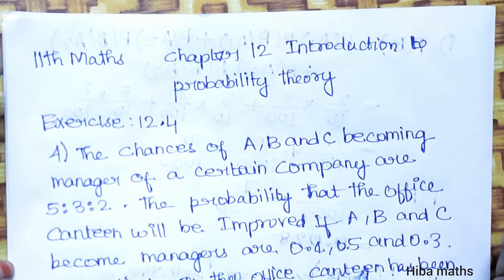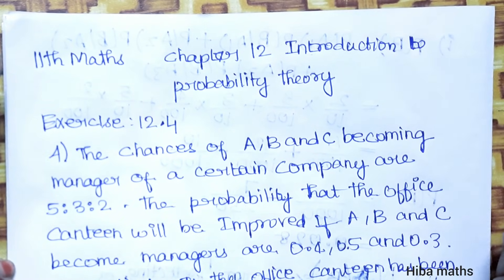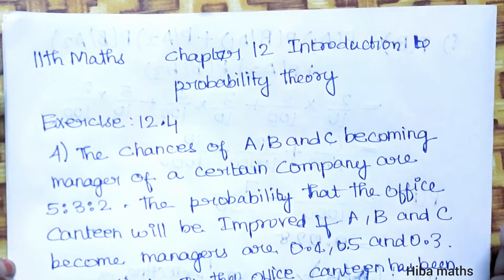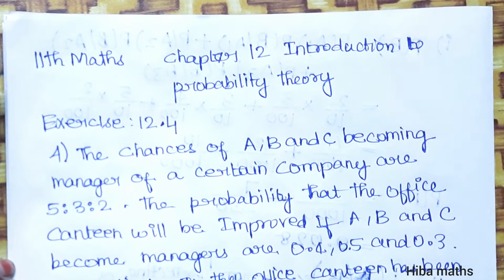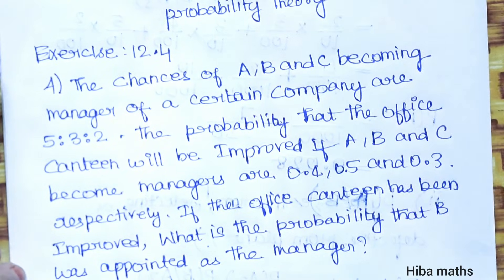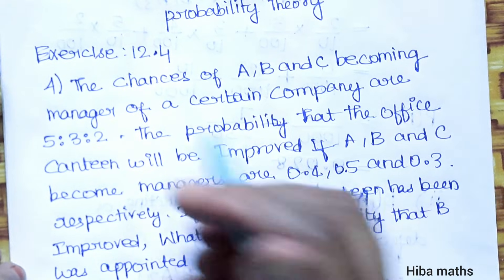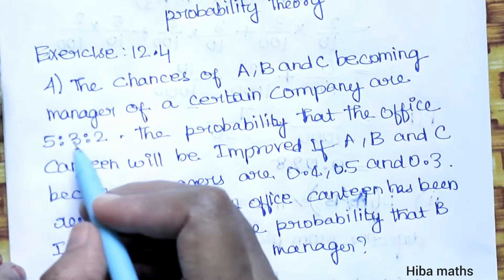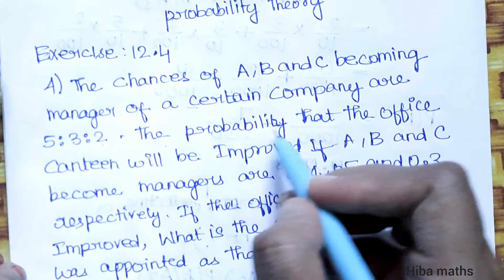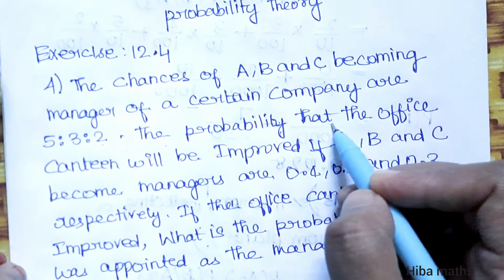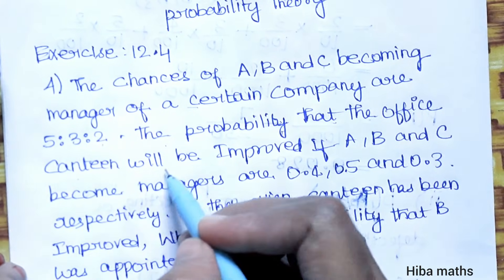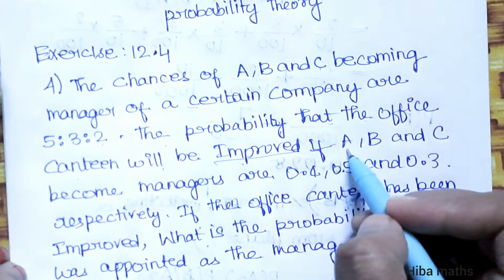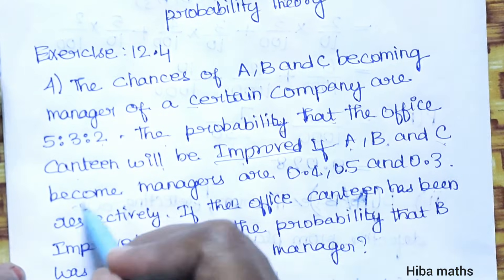Hello students, welcome to Hibamax 11th standard, Chapter 12, Introduction to Probability Theory, Exercise 12.4, fourth question. The chances of A, B, and C becoming manager of a certain company are in ratio 5 to 3 to 2. The probability that the office canteen will be improved if A, B, or C become managers...